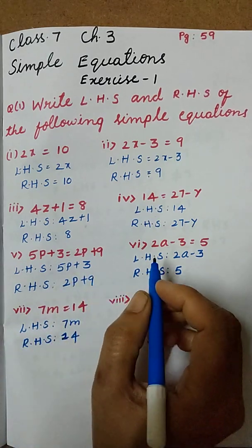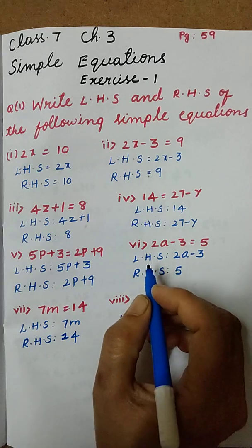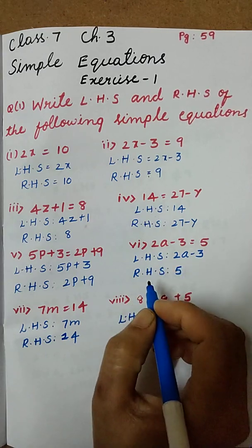Now next question: 2a minus 3 equal to 5. Here LHS is 2a minus 3 and RHS is 5.